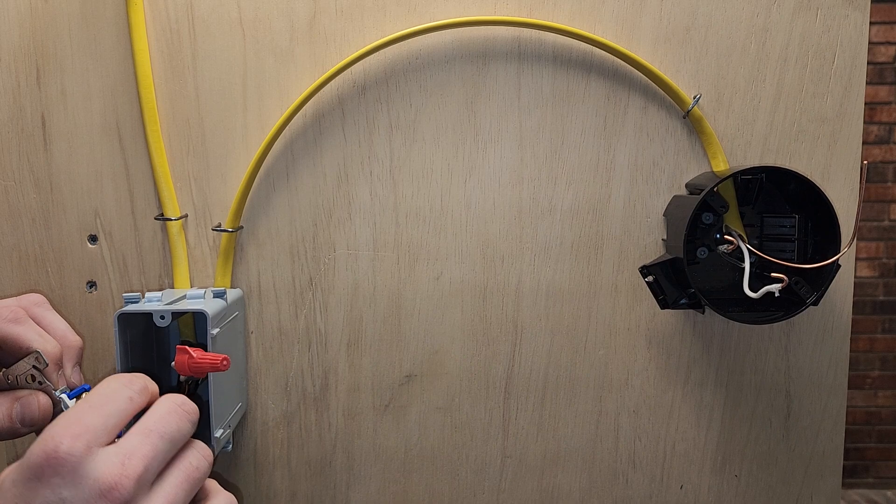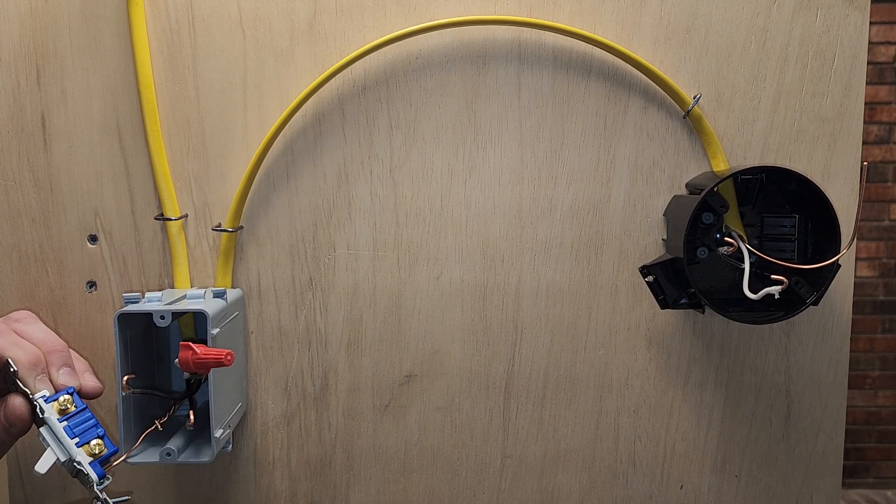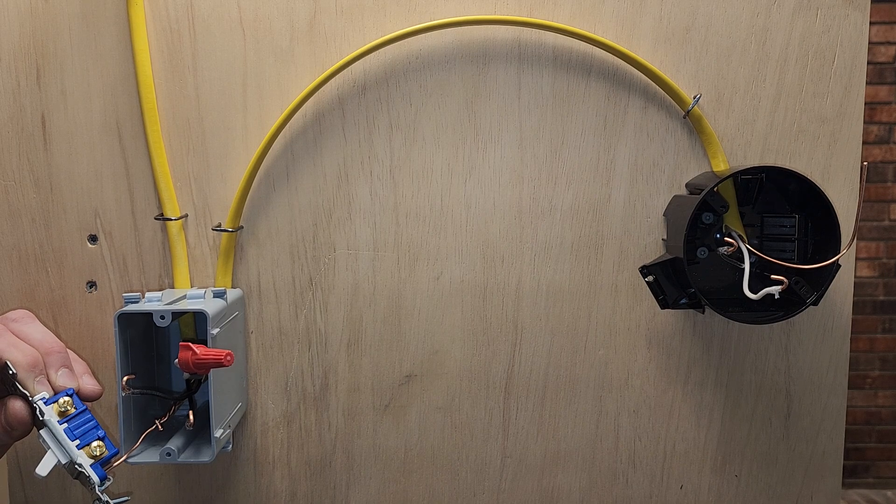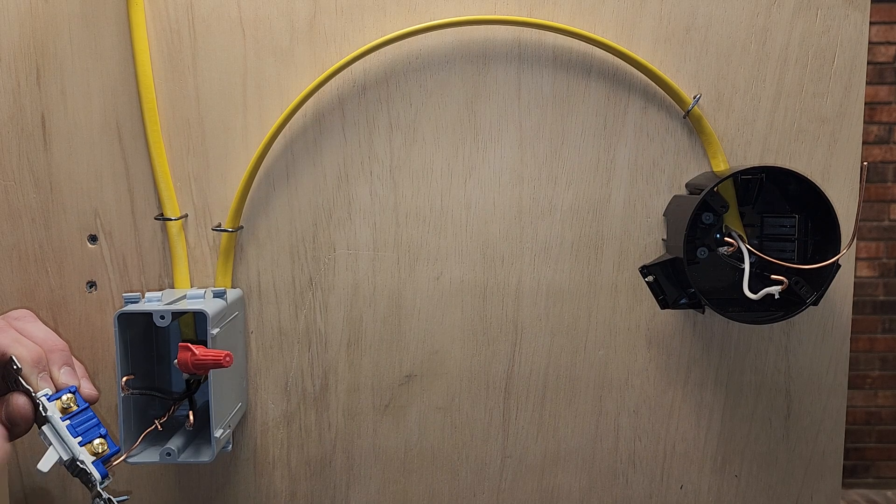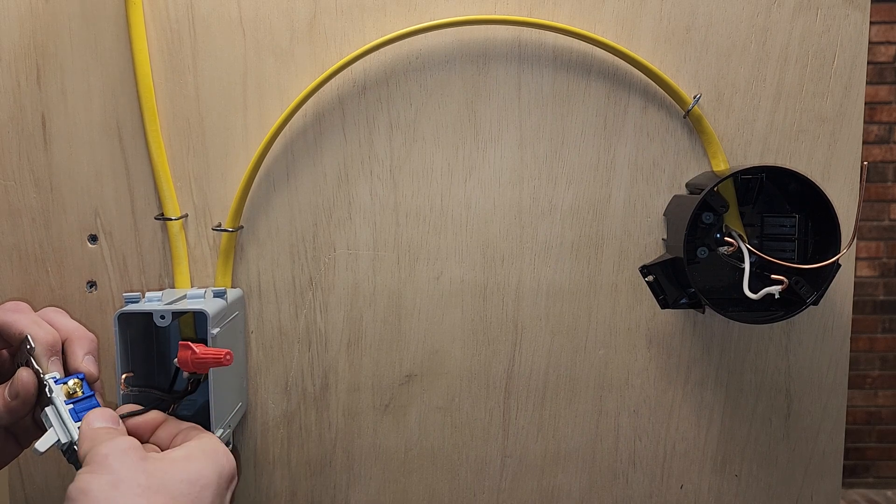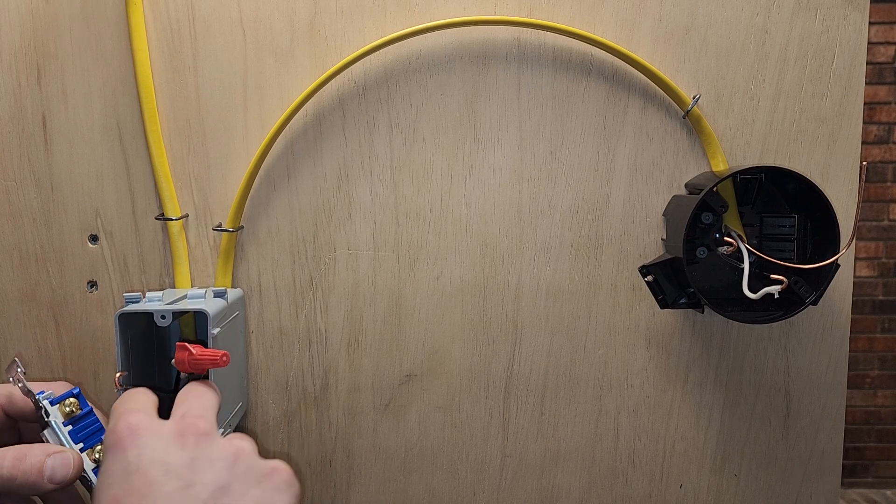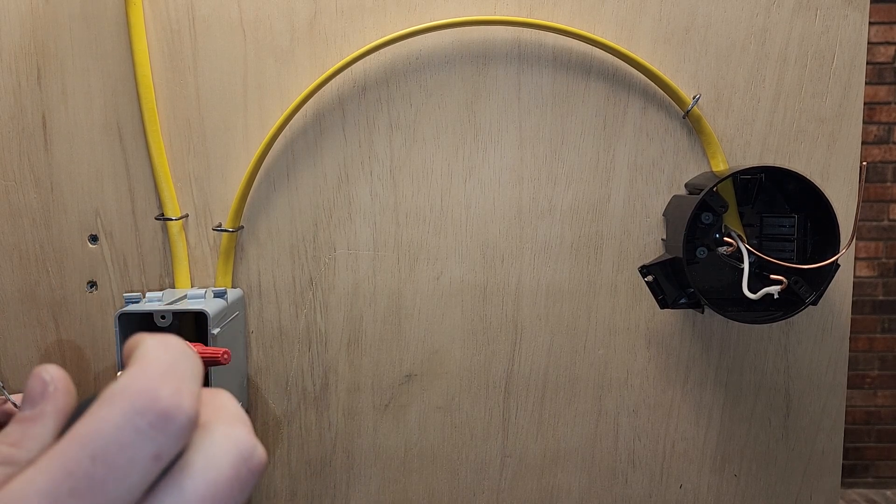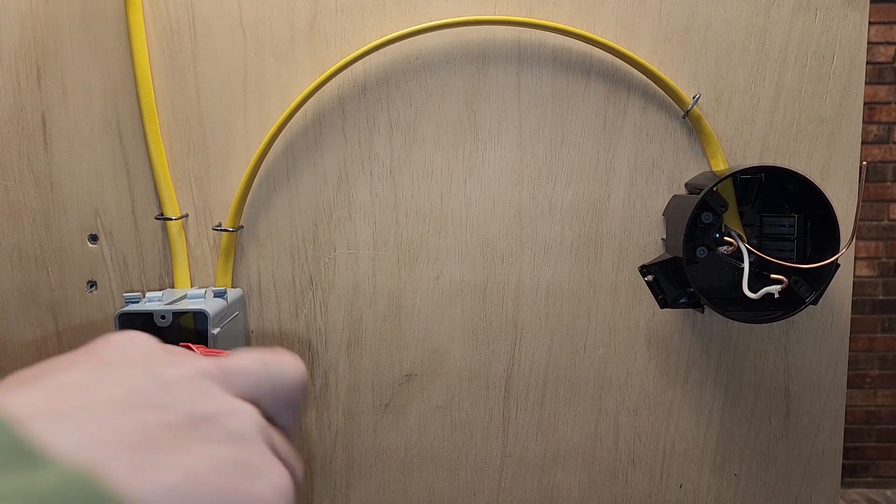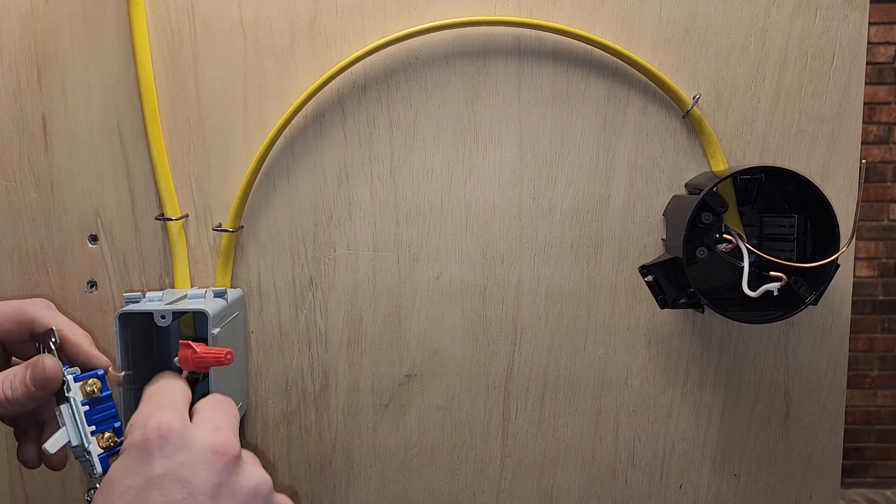Now, we have our two hots, our switch leg hot and our incoming power hot. It doesn't matter in theory where they go on the switch, but the best practice is always put power on the bottom. Anybody coming behind you, another electrician is going to assume power is on the bottom, but it doesn't matter. Power goes to bottom, our switch leg will go to the top.